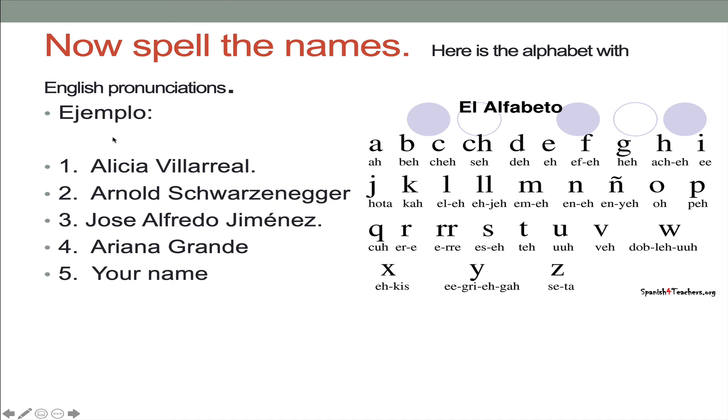como se escribe, how is it written? It's A, L, I, C, I, A. V, I, EYE, or you can say L, L. A, R, R, E, A, L. Okay? So pause, try to spell all the names right here, come back and check whether you did it correctly. Okay?